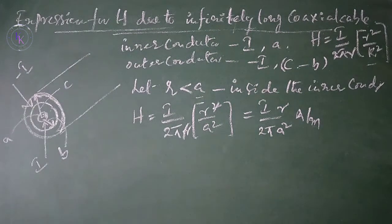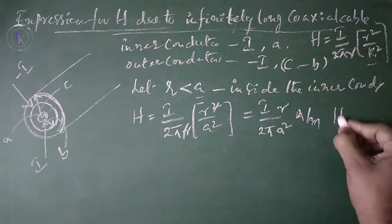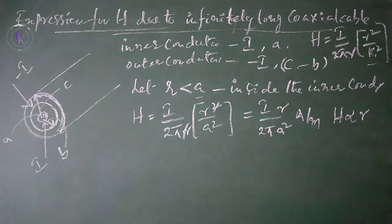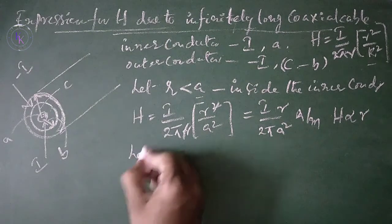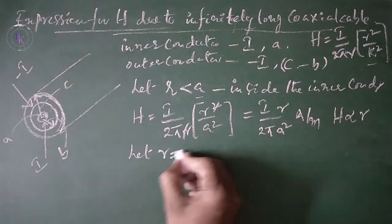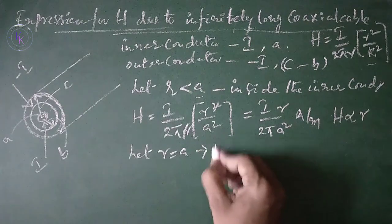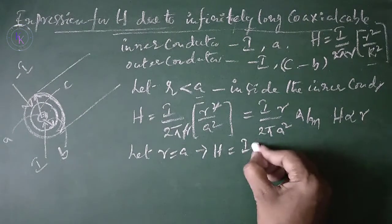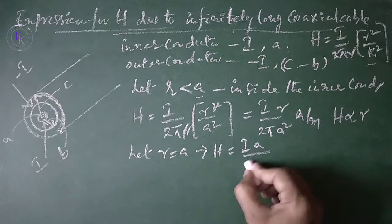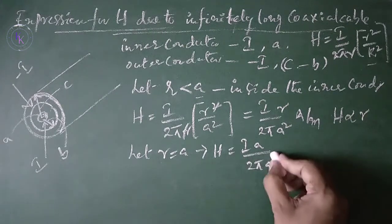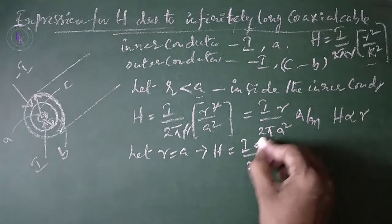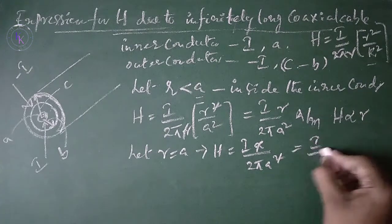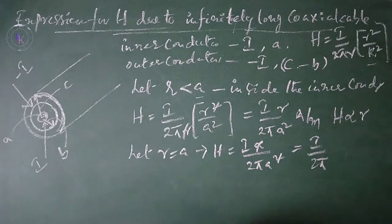From this we can say H is proportional to r. Let r equal a: H equals I divided by 2πa² multiplied by a, which gives I divided by 2πa amperes per meter.